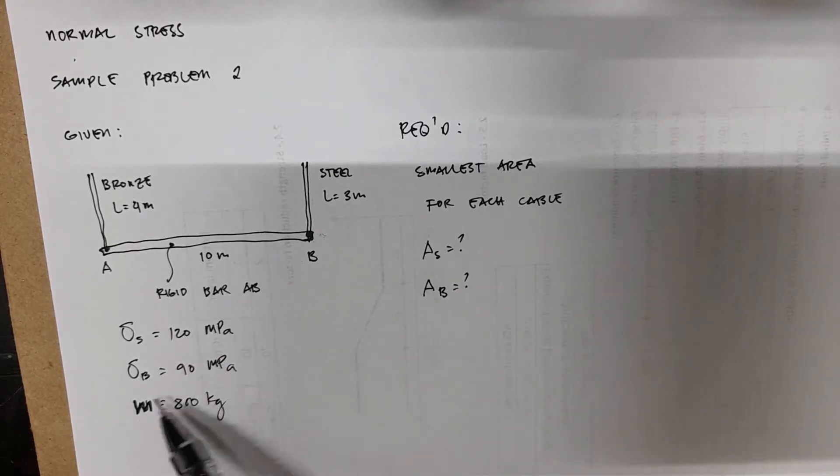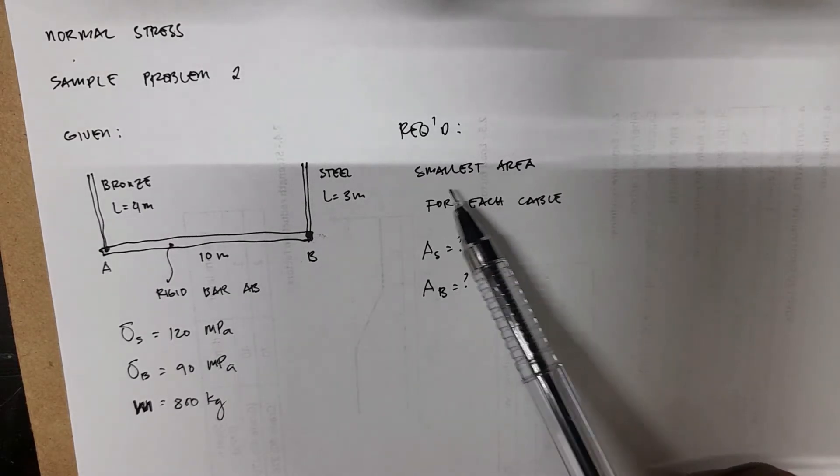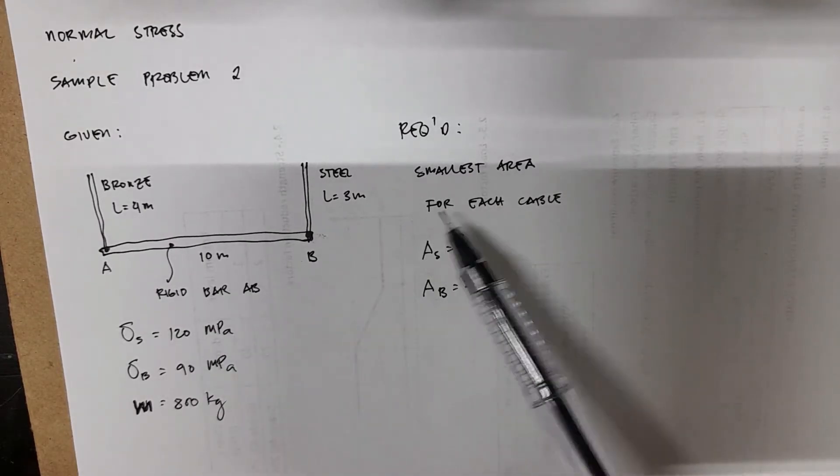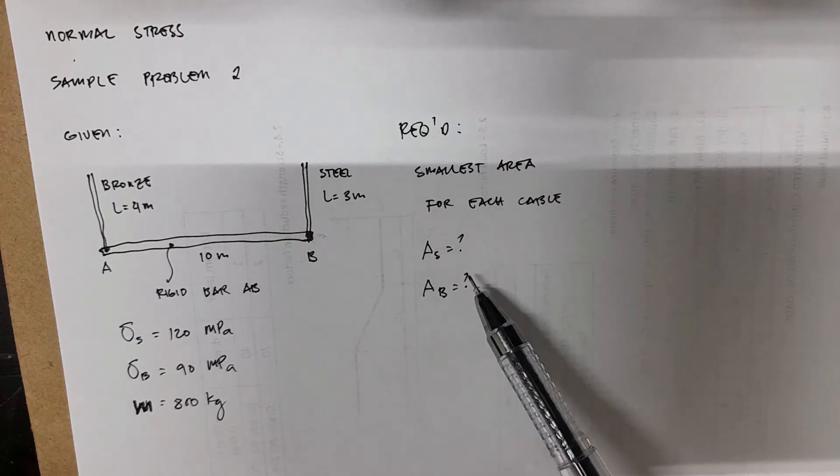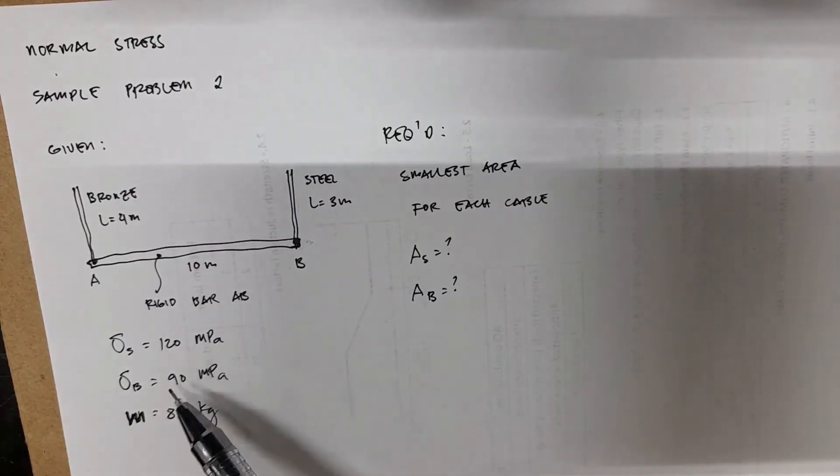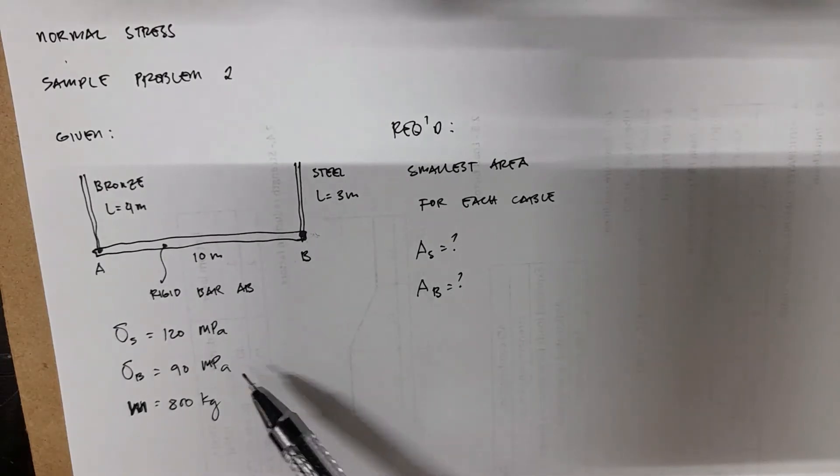We're also given with the mass of the bar, 800 kilograms. So before we start with this, the required for this problem is that we have to find the smallest area for each cable so that these limiting stresses are not exceeded. So we're going to find AS and AB.